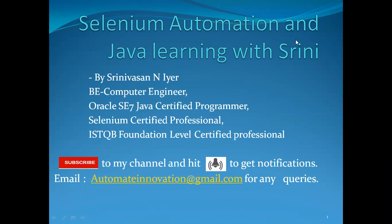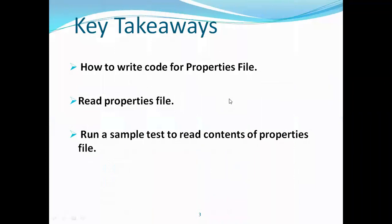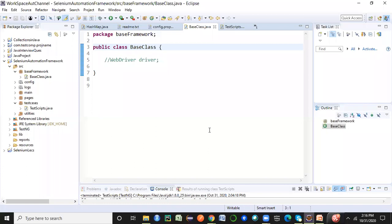We are going to look at the first component in the automation framework from scratch, and that is the properties file. The key agenda for today is: what is the properties file, how to write the code for it, how to read the contents of a properties file, and we'll run a sample test case to perform this action.